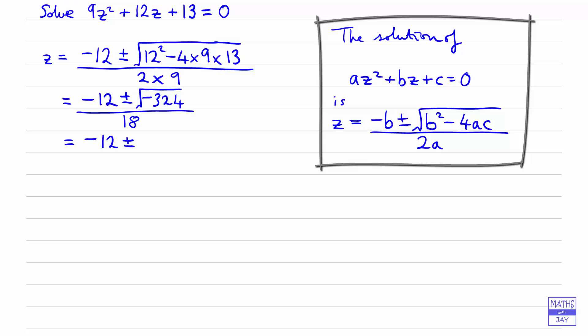Now we've got a square root of a negative number here, so that's going to be the same as the square root of 324, which is 18, times the square root of minus 1, which is i. So that's all over 18.